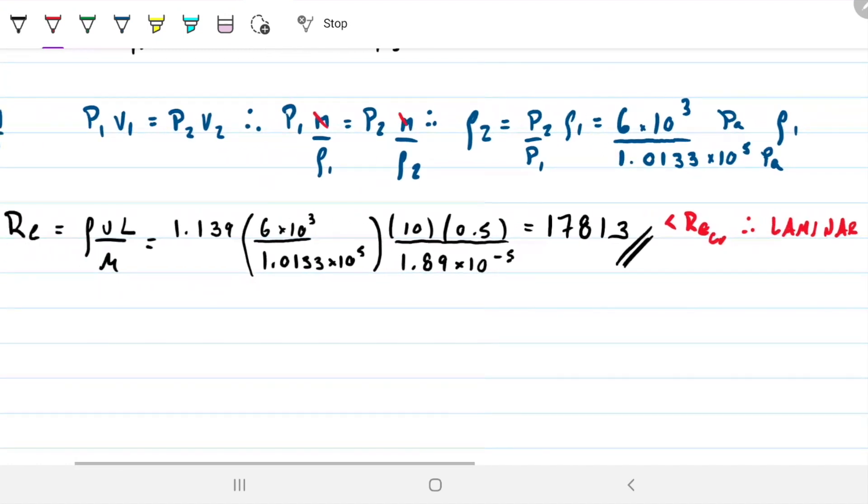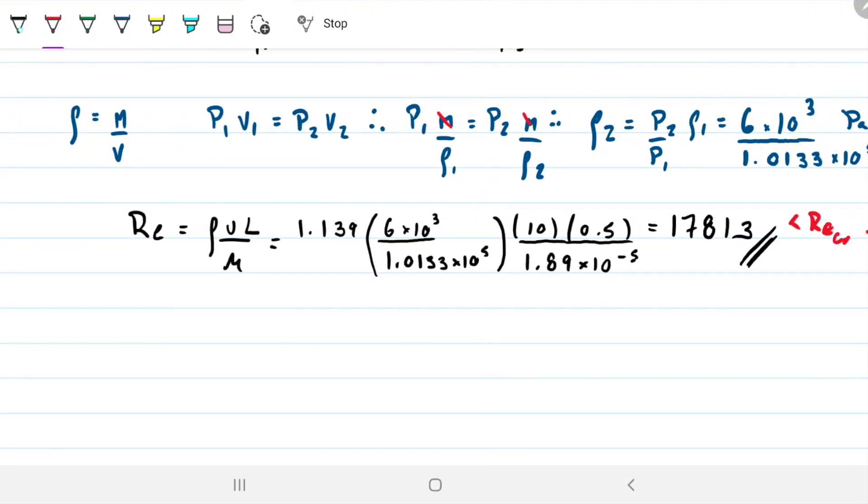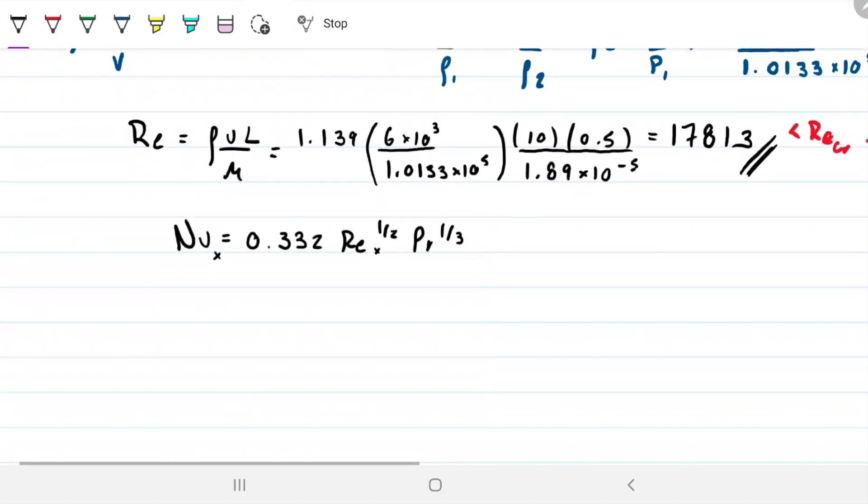We have to use laminar equations to describe this situation. If you guys recall, under these conditions, under laminar with Reynolds below critical and Prandtl between 0.6 and 60, which is what we have, the equation that describes this is 0.332 Reynolds_x^0.5 Prandtl^(1/3). If we want the average Nusselt, what we do is we'll integrate from 0 to L and divide by L, so we can get the average over the whole thing.